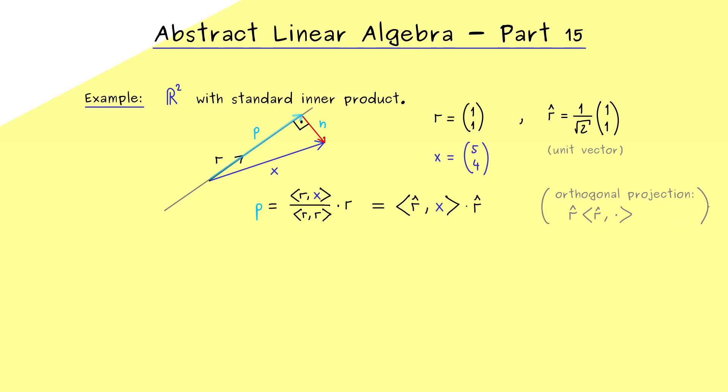So this is the general thing, but now let's calculate it for our example. So not hard at all. We calculate the standard inner product, and then we see we just have 5 plus 4 here, and of course also times our vector r-hat. Hence what we get is simply 9 halves in both components.